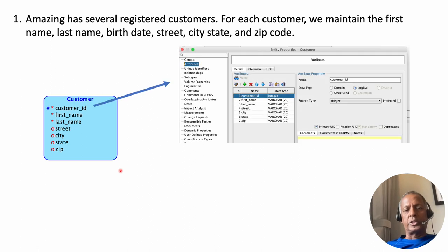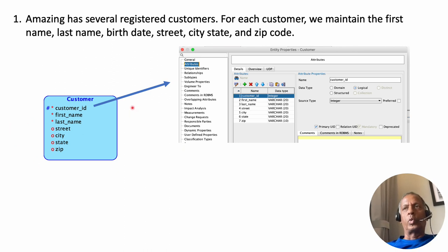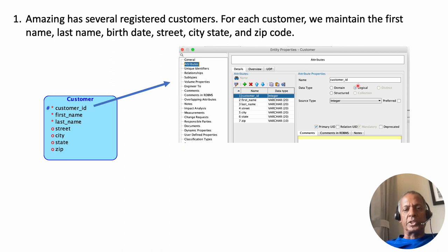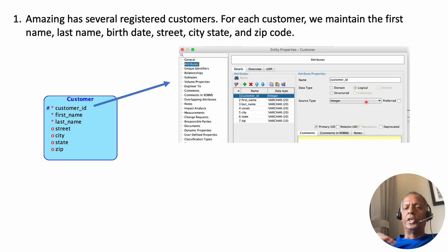A couple of things to note. First, customer ID — I have made it into a primary key. Notice that I have called it customer underscore ID. It's good practice to follow: whatever your entity type name is, entity_name underscore ID would be the primary key. You can follow that consistently. The important point for your project is to make all primary keys integers. So the type is integer — that's what I want you to do for all entity types.